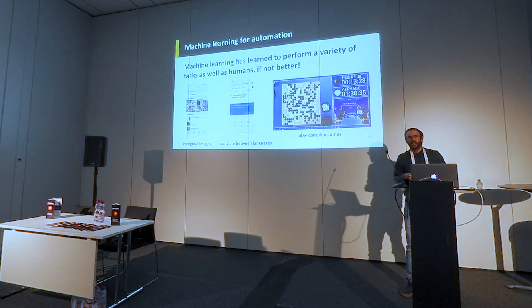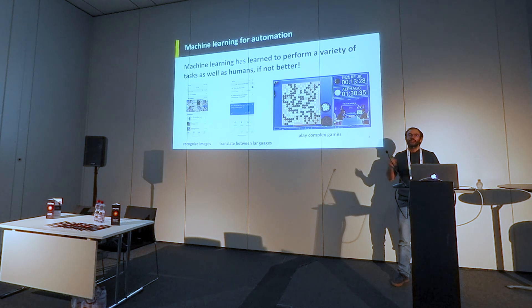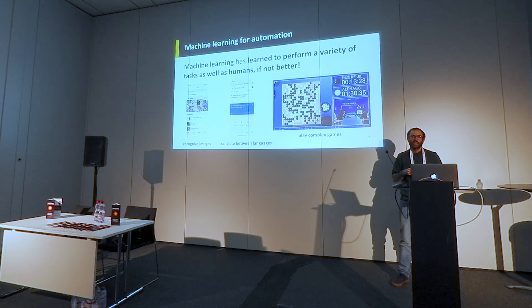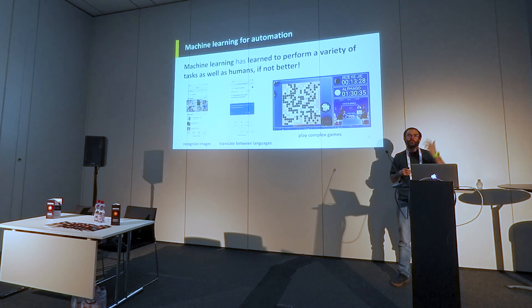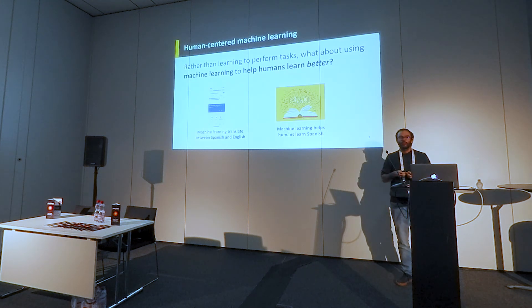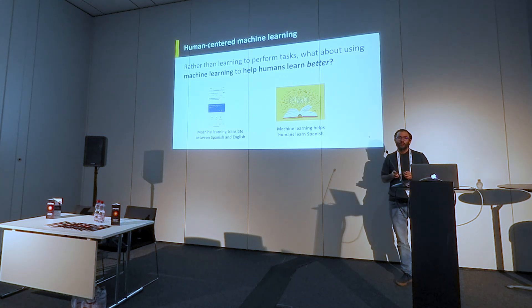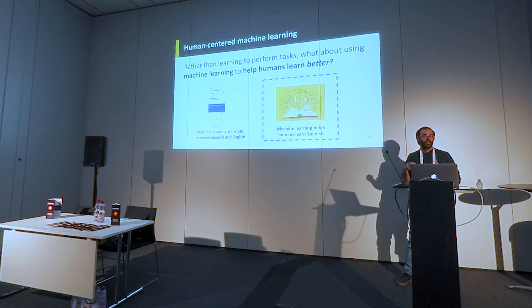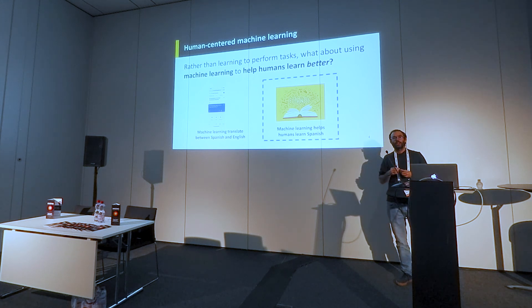One of the reasons why many of us are here is the idea that machine learning and AI in recent years has been used for many applications: they can translate from one language to another, recognize images — you can go to your phone and say 'look for photos of cats.' But the question is: can we use machine learning not just to automate tasks like translation, but to actually help people become better at translating, better at learning a language?